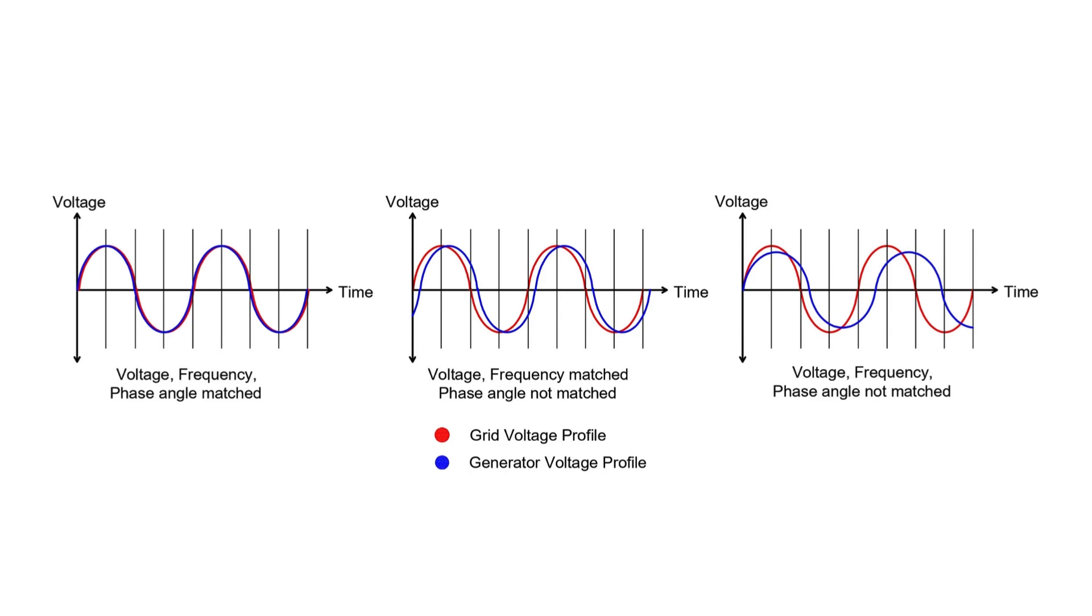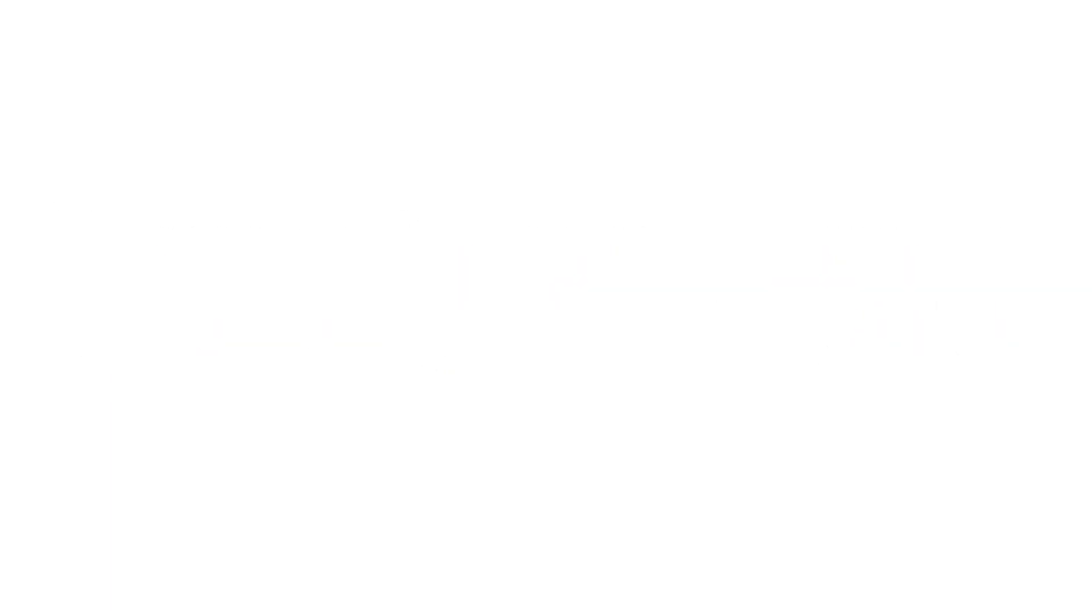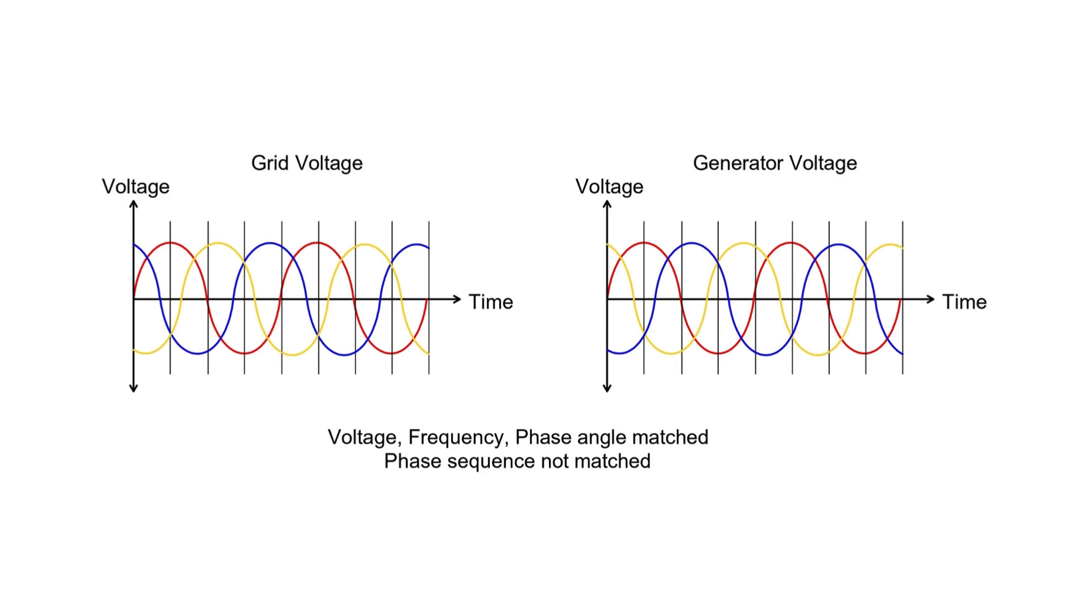Since the voltage produced by the alternator is AC, the voltage profile of the incoming generator must match the running generators, requiring similar parameters. If the voltage profile doesn't match when the breaker is closed, the voltage difference could damage the generator.